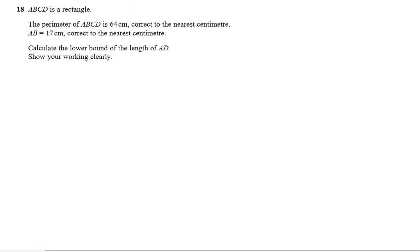Question number 18. ABCD is a rectangle. The perimeter of ABCD is 64 cm, correct to the nearest cm. AB is equal to 17 cm, correct to the nearest cm. Calculate the lower bound of the length AD.